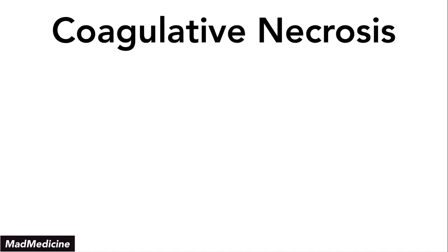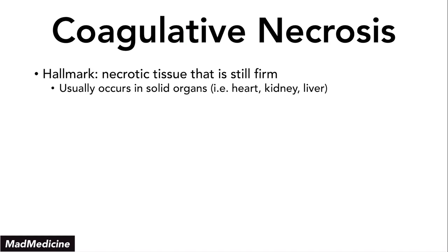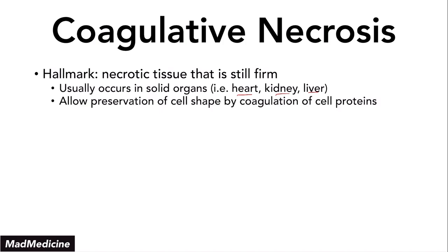Coagulative necrosis occurs when the necrotic tissue remains firm. Usually this is going to happen in solid organs like the heart, the kidney, and even the liver. When the cells are dying off, they preserve their shape by coagulating the cell proteins — hence why it is called coagulative necrosis. These solid organs are very important and our body does not want to lose the structure even though we are losing cells, because if you lose the structure, you will further lose the ability of that organ to function.